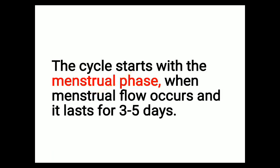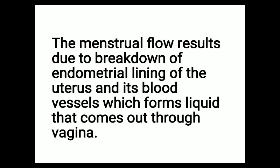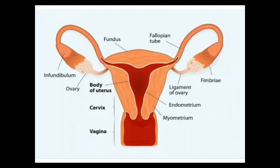During the menstrual phase, menstrual flow occurs and it lasts for around three to five days. The menstrual flow results due to the breakdown of the endometrial lining of the uterus and its blood vessels, which forms a liquid that comes out through the vagina. The endometrium is the innermost lining of the uterus.